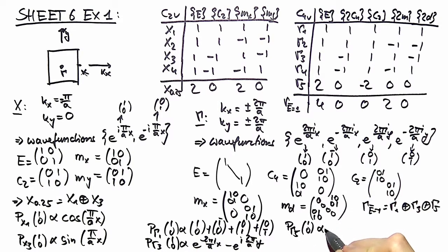The interesting part is here, our gamma 5 representation. Projecting onto it with (1,0) gives you something proportional to 2 times (1,0) minus 2 times (1̄,0), and this of course you can recognize as the sine of 2πx/a.